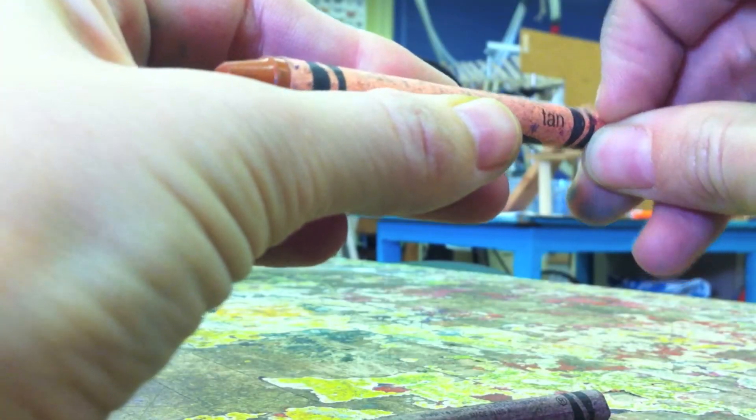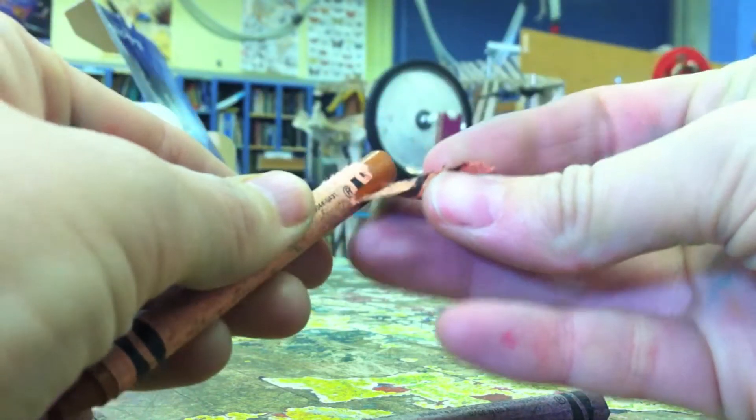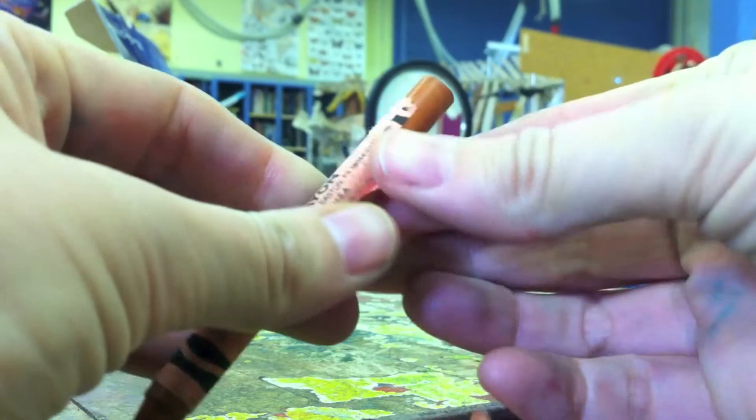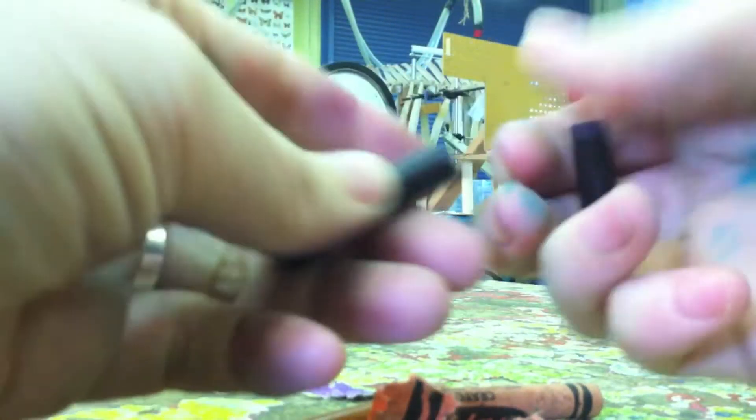Take the crayons and peel the paper wrapper off them. Now for a little mechanical and physical weathering. Break the crayons into small pieces.